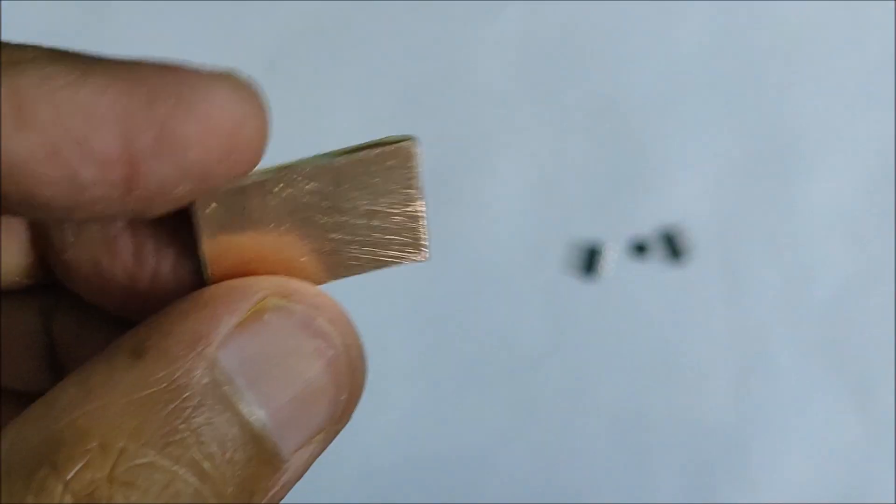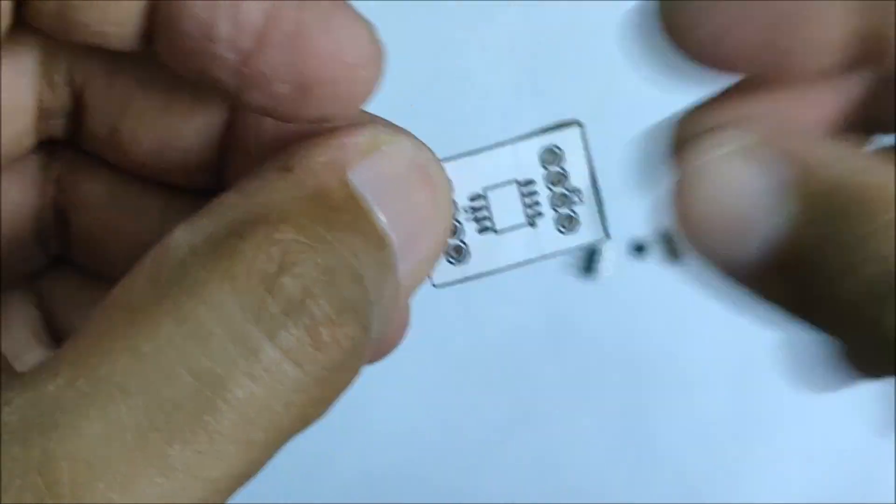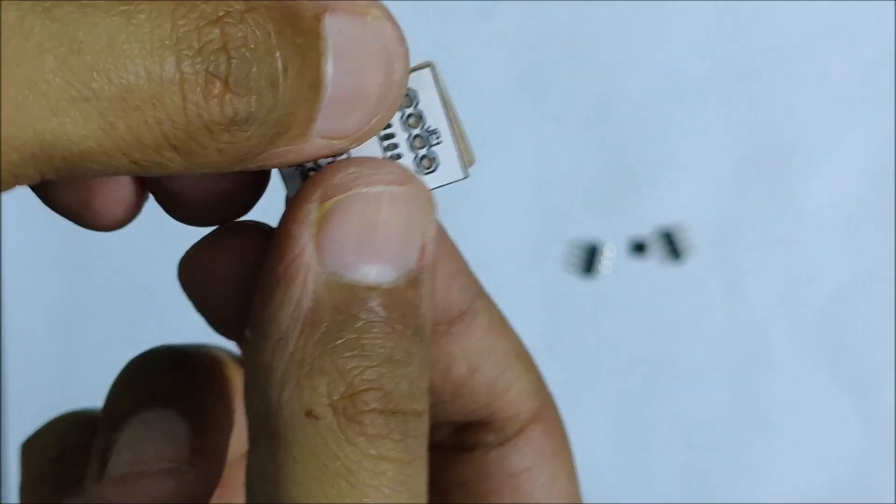I then got myself a small piece of copper clad board which I had cut according to the size of my PCB, which I later attached with the printout.